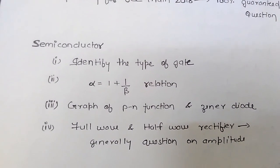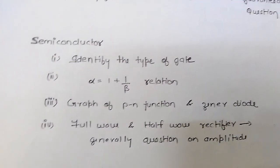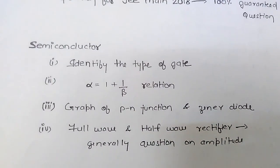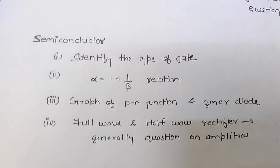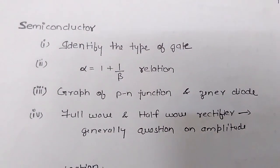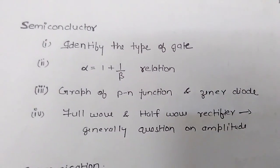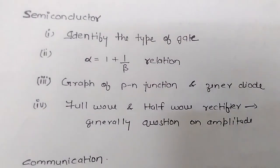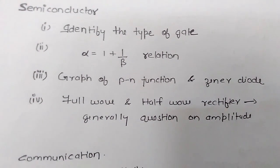Semiconductor: identify the type of gate, alpha equal to 1 plus 1 upon beta relation, graph of PN junction and Zener diode, full wave and half wave rectifier, generally question on amplitude.